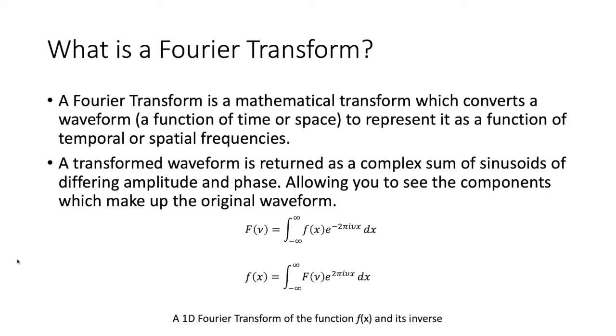Okay so first off, what are we talking about? Well a Fourier transform is a mathematical transform which takes a waveform, either a function of time or space, and transforms it to represent it as a function of frequencies, temporal or spatial depending on whether the input was a time or space waveform. The transformed waveform is then returned as a sum of sinusoidal functions of different amplitude and phases. This is important as it allows you to see the components which make up your original waveform.